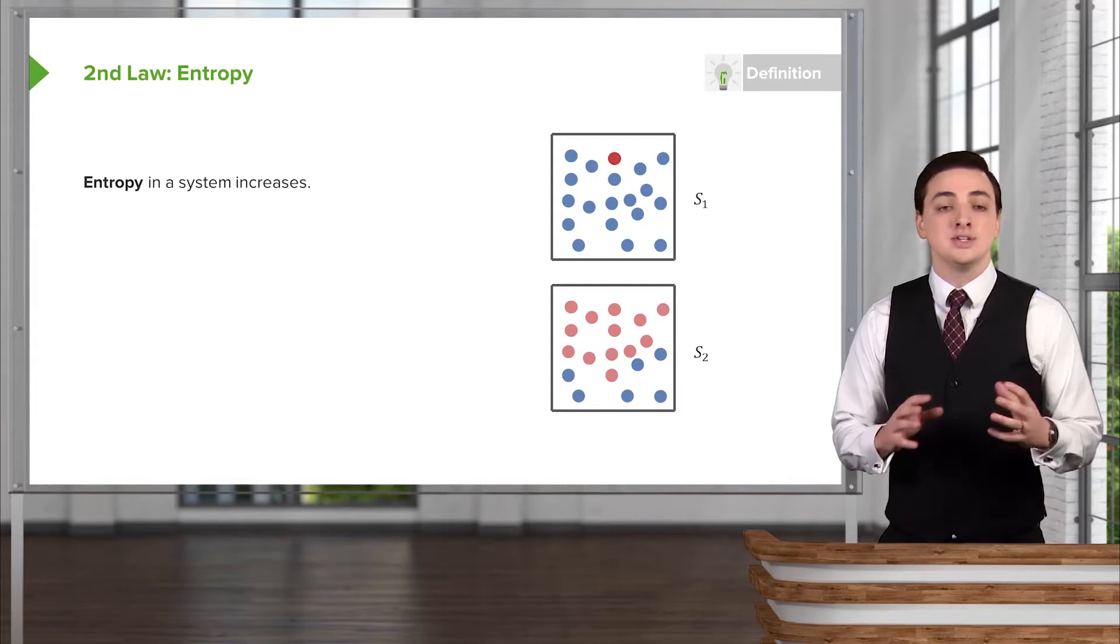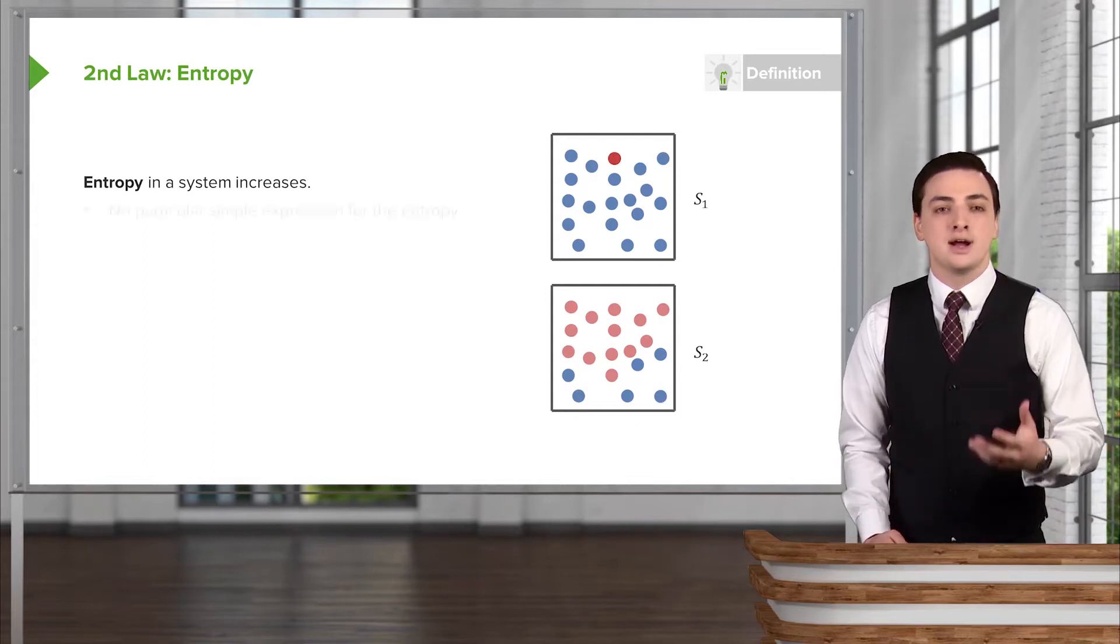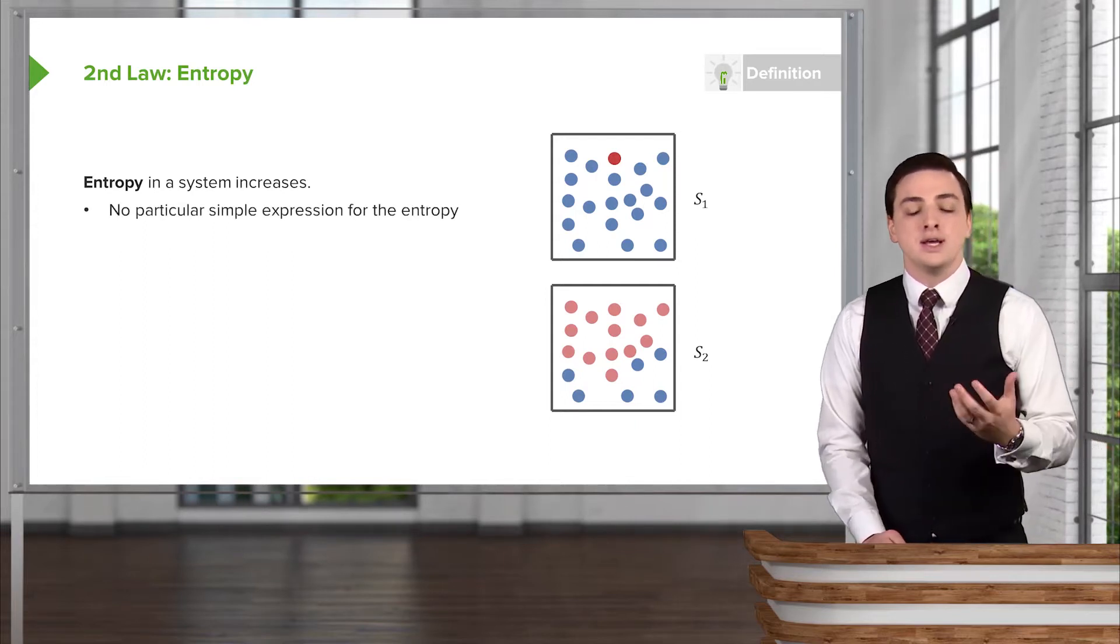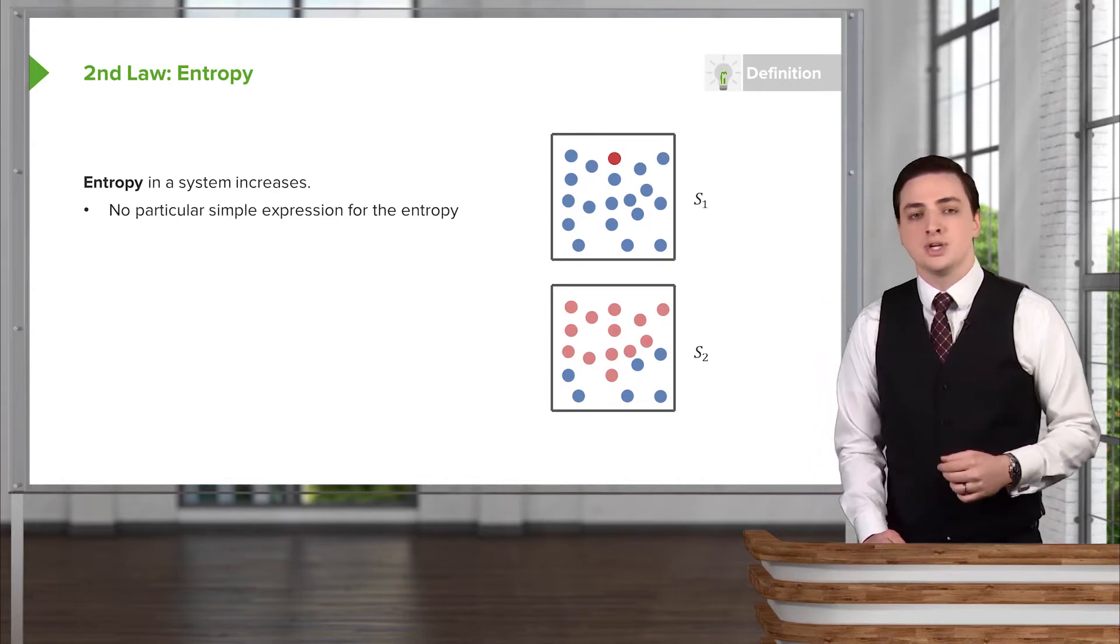Sometimes the entropy is called the disorder of a system, or how chaotic a system is. But we won't have a particular simple expression for the entropy.